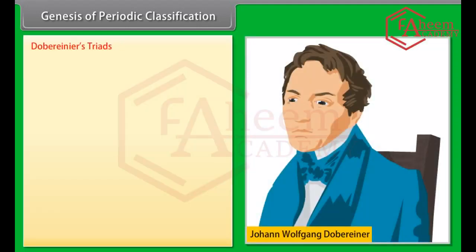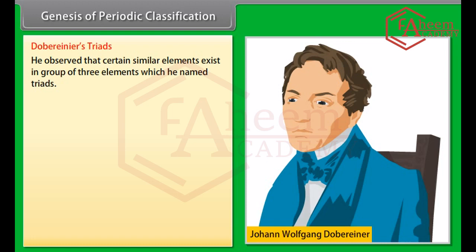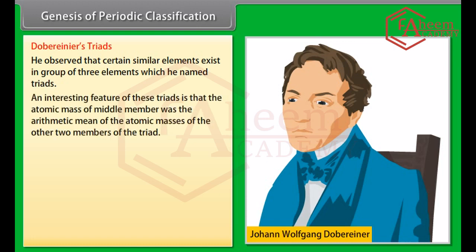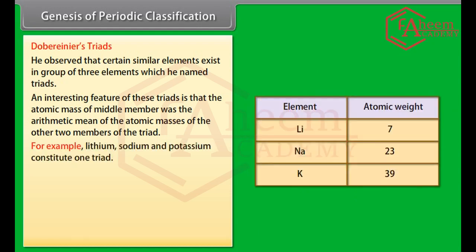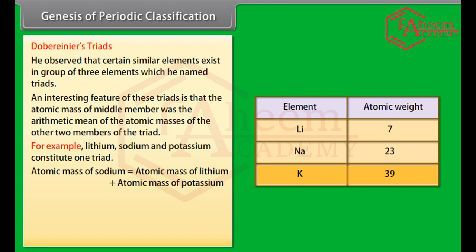Genesis of periodic classification: Dobereiner's Triads. He observed that certain similar elements exist in groups of three, which he named triads. An interesting feature of these triads is that the atomic mass of the middle member was the arithmetic mean of the atomic masses of the other two members. For example, lithium, sodium and potassium constitute one triad. The atomic mass of sodium equals (7 + 39) / 2 = 23.